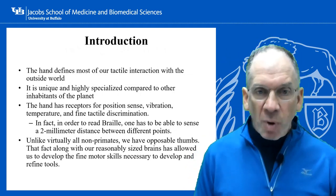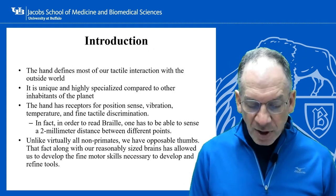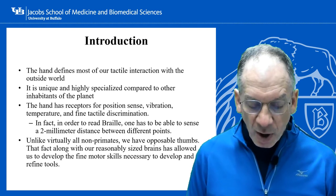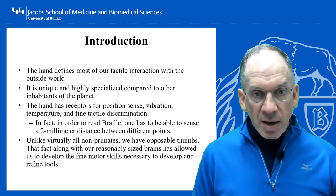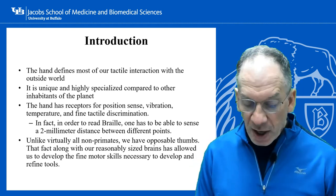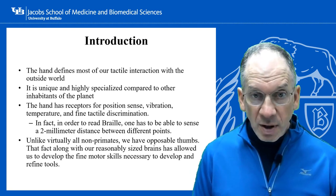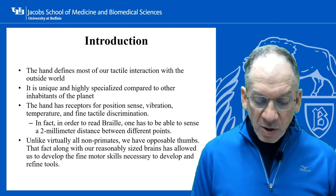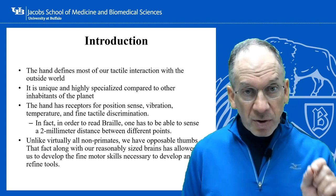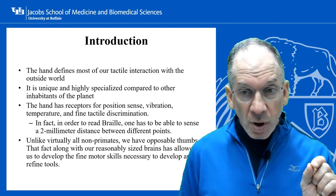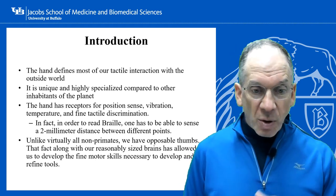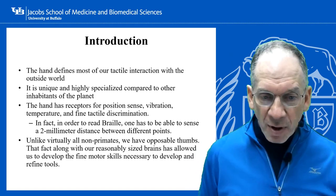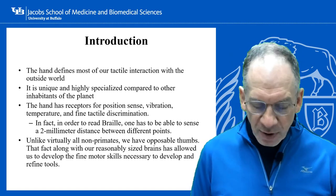Introduction. The hand defines most of our tactile interaction with the outside world. It's very unique and specialized compared to other inhabitants of the planet. The hand has receptors for position sense, vibration, temperature, and fine tactile discrimination. In fact, in order to read Braille you have to be able to discriminate points that are two millimeters apart.